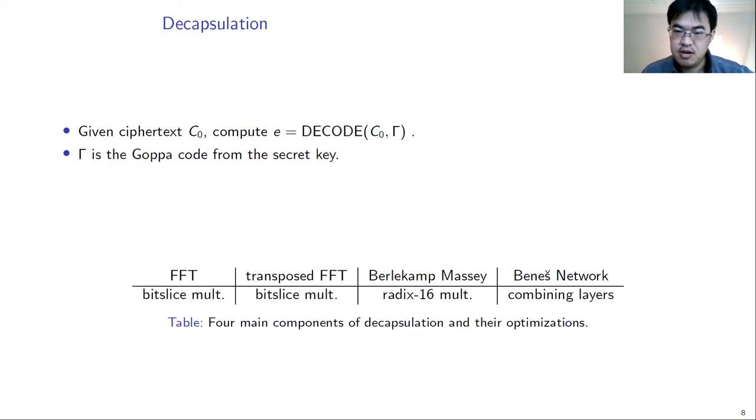Then we talk about the last key operation, decapsulation. Besides deriving a shared key, the main computation in decapsulation is to decode the error vector from a received ciphertext. The decoding algorithm takes two inputs. One is the received ciphertext and the other is the secret Goppa code from the secret key. In the table below, we list the four most important components in decapsulation and their optimization methods.